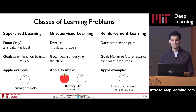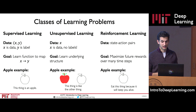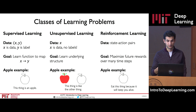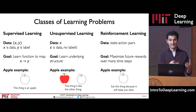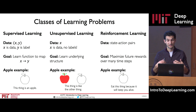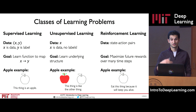In reinforcement learning, we are given data in the form of state-action pairs. States are the observations that an agent or player sees, and actions are the behavior that agent takes in those states. The goal is to learn how to maximize some metric of rewards or future rewards over many different time steps. In our apple example, the agent doesn't know the thing is an apple — it just learns that it should eat it because when it does, it survives longer. It doesn't understand what it is, but it got this reward over time by eating an apple and became healthier.